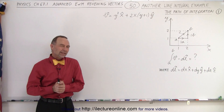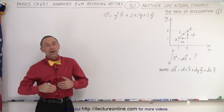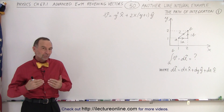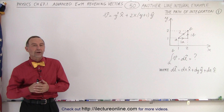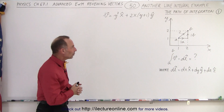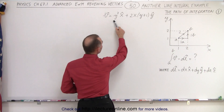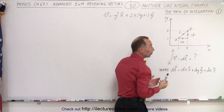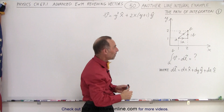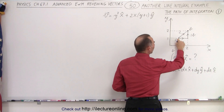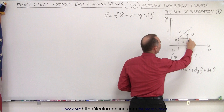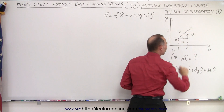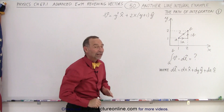Welcome to ElectronLine. Now let's work out a slightly more complex example. It's still not very difficult, but it helps us understand how to conduct a line integral. We have a vector defined here, and we're going to integrate along a path from A to B, taking two different paths. The first path goes from point (1,1) to (2,1), and then from (2,1) to (2,2). The second time, we'll travel directly from A to B in a slanted path.